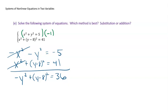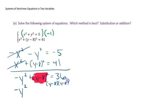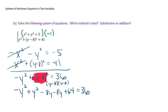Now I need to FOIL out (y−8)²: that's y² − 8y − 8y + 64 = y² − 16y + 64. Substituting: −y² + y² − 16y + 64 = 36. The −y² and +y² cancel each other out — which is wonderful, because we don't have to deal with the plus-or-minus issue. That leaves −16y + 64 = 36.